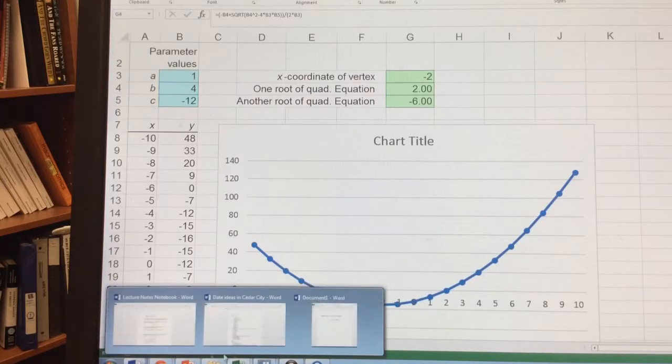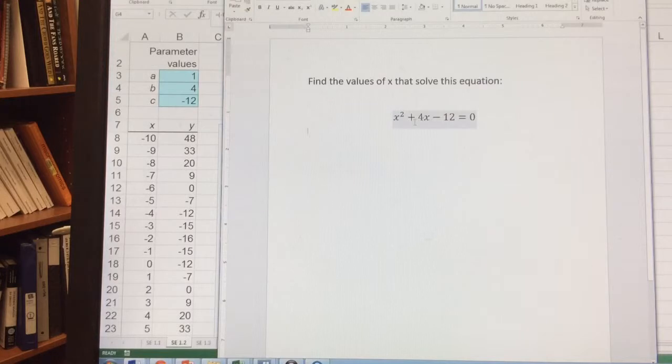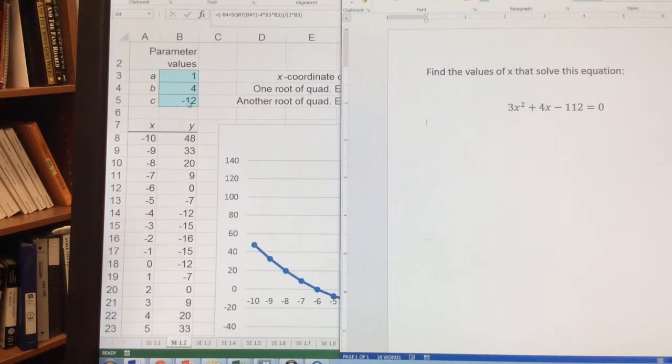And what's nice is once I get this template saved or created and it's correct, I can save it. And then all I have to do is just change this. So let's suppose that instead of x squared plus 4x minus 12, I have 3x squared minus 112. It's just some random number. So now all I have to do is insert my values for a, b, and c. So a in this case would be 3, b would be 4, and c would be negative 112.